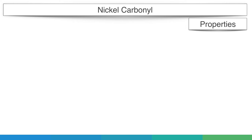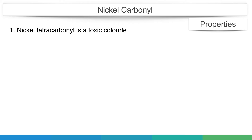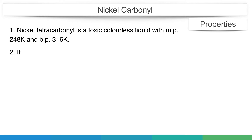Properties: 1. Nickel tetracarbonyl is a toxic, colorless liquid with a melting point of 248 degrees Kelvin and a boiling point of 316 degrees Kelvin. 2. Its vapors form an explosive mixture with air.